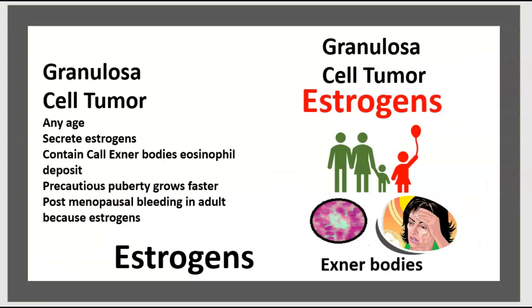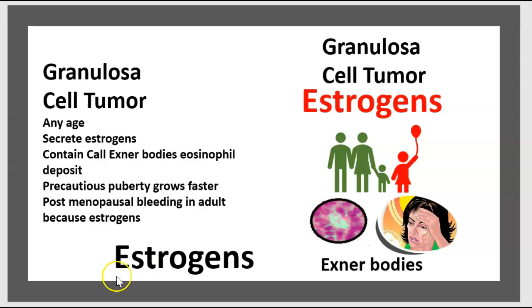Granulosa cell tumors can occur at any age. There is secretion of estrogen and they contain Call-Exner bodies — a characteristic field deposit. This leads to precocious puberty in young girls, and in adult post-menopausal women, there is bleeding due to estrogen secretion.